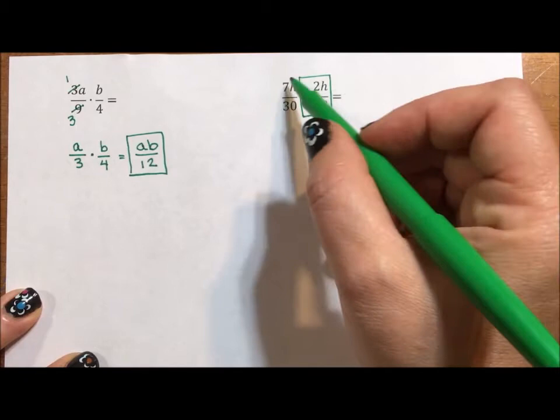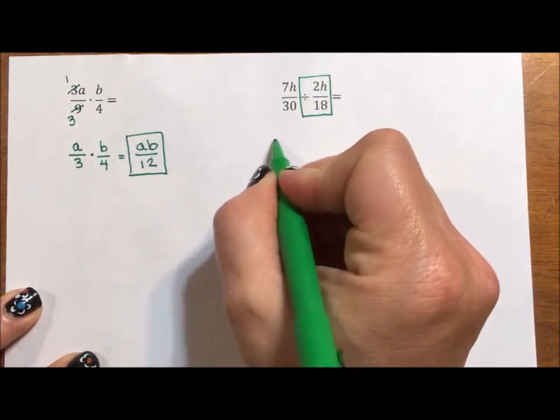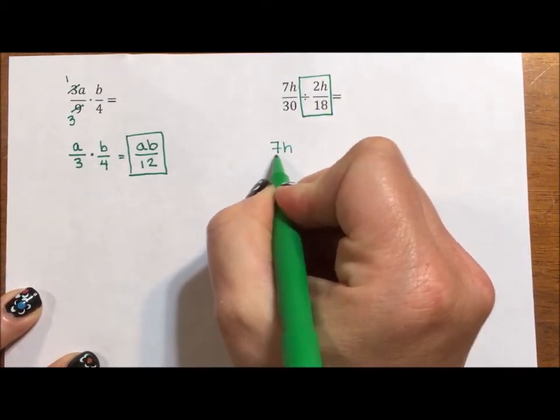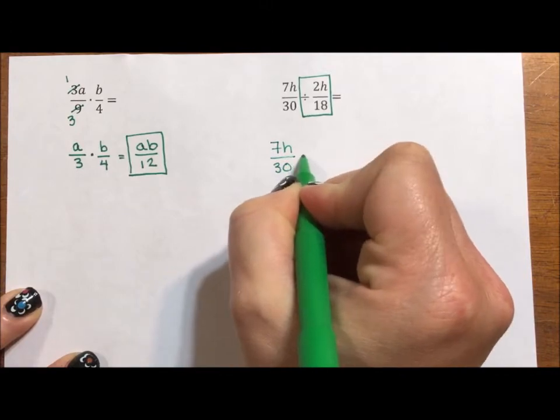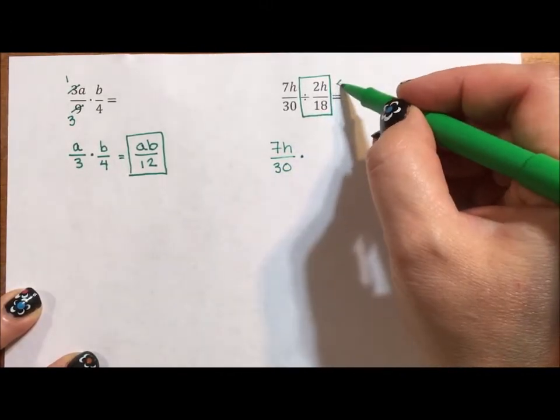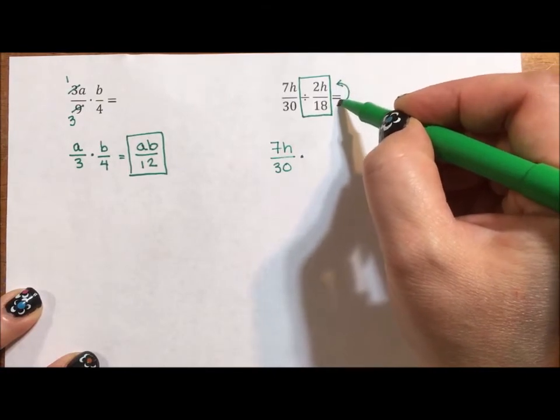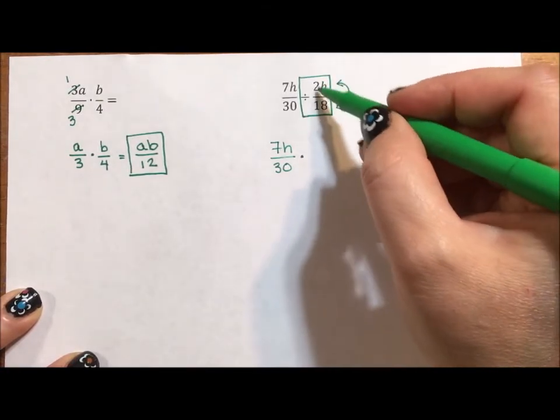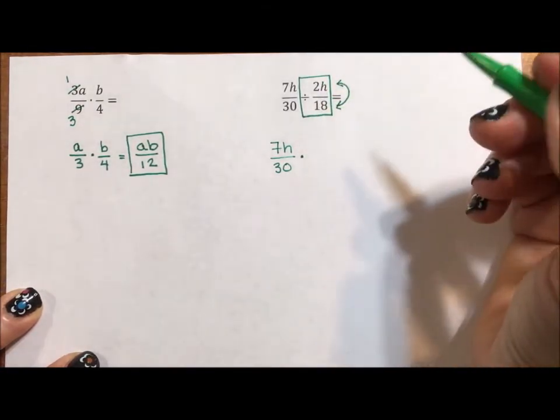For my 7h over 30, 7 doesn't go into 30, so I'm just going to write this as 7h divided by 30 times. The reciprocal of this is putting the 18 in the numerator and the 2h in the denominator, but before I do that, I'm going to realize that the 2 divides evenly into the 18.